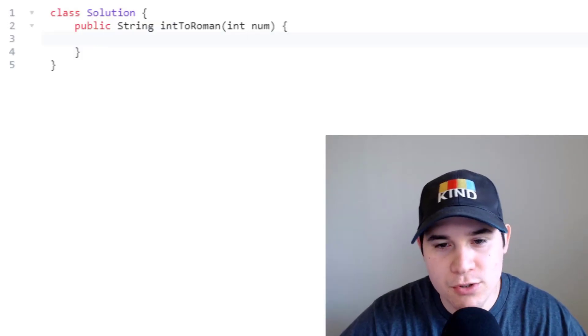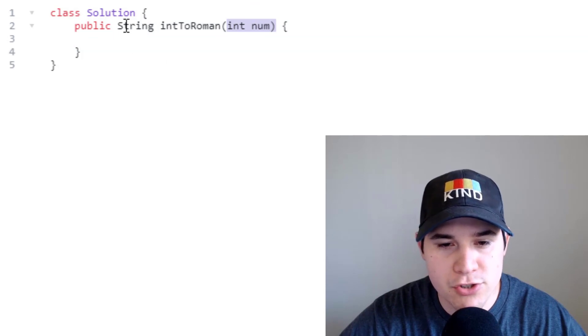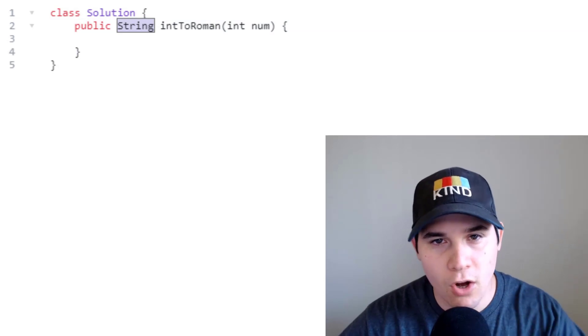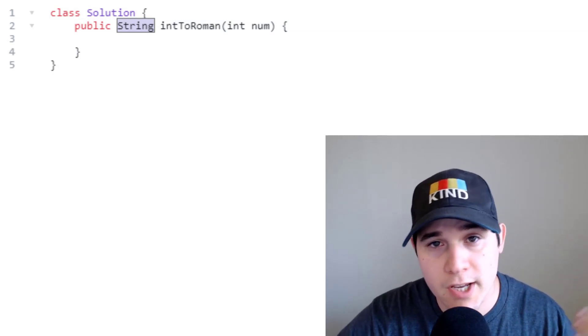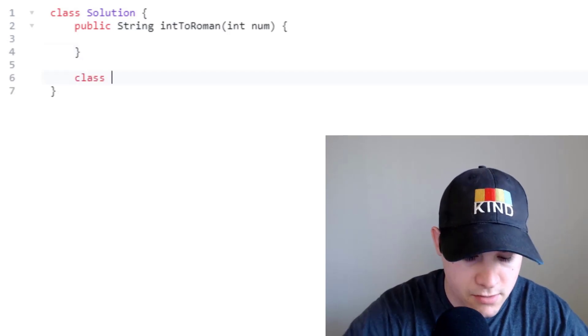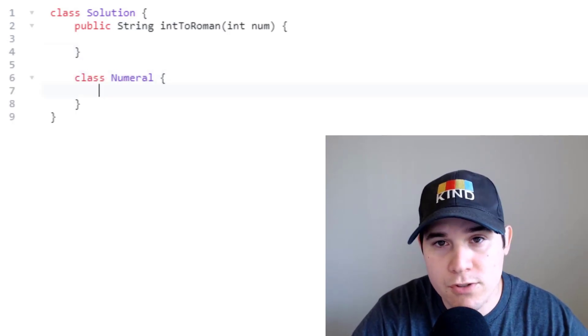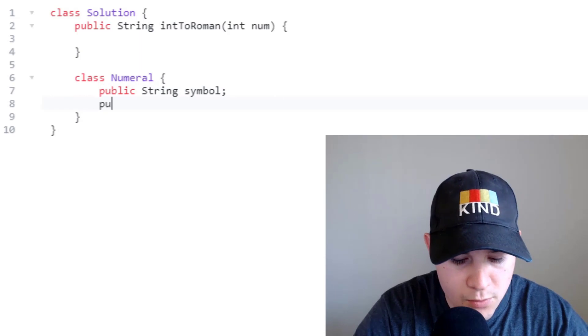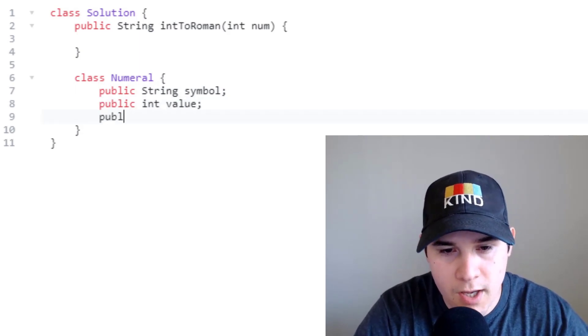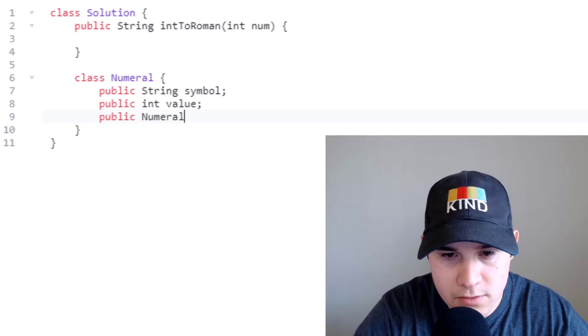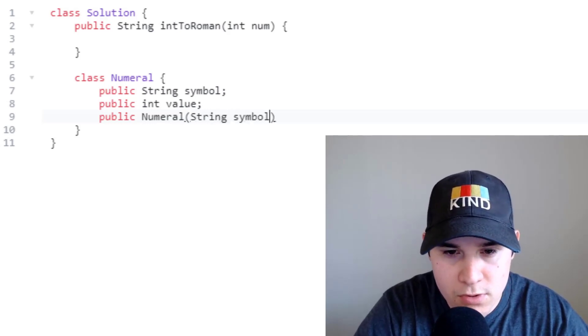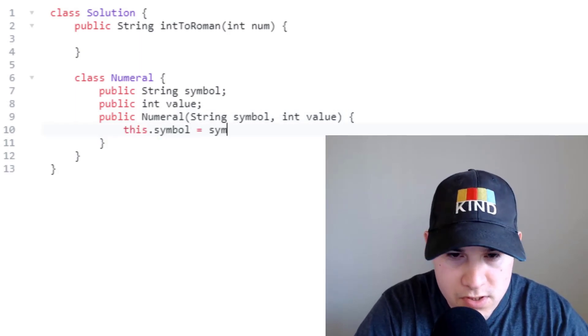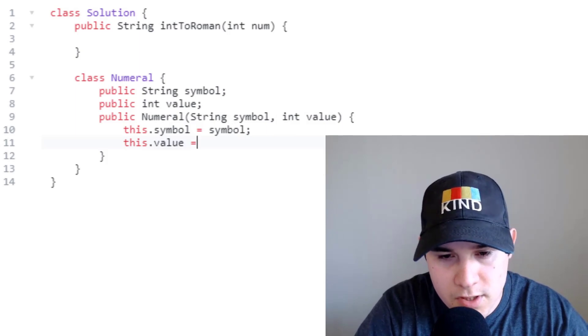Okay let's implement the code for this solution. We are given an integer num and we need to return a string which will be the roman numeral. To start things off we need to define all of our numeral pairs. So we can create a class. We can say class numeral and we're going to have two attributes: the symbol and the actual value. And let's create a constructor. So we'll pass in our symbol, pass in our value and assign them. We'll say this.symbol equals symbol and this.value equals value.